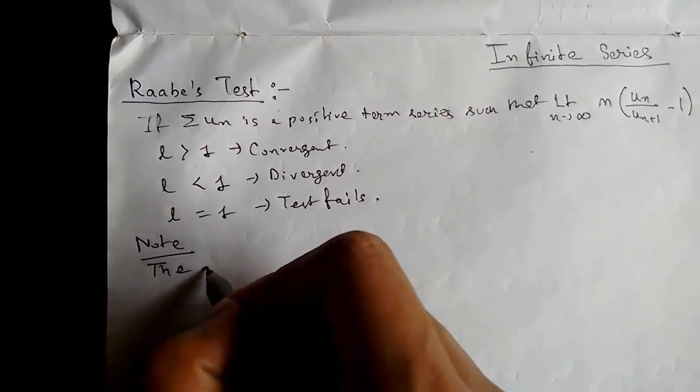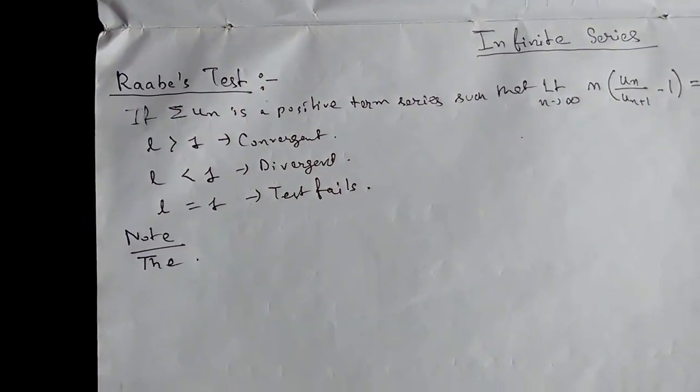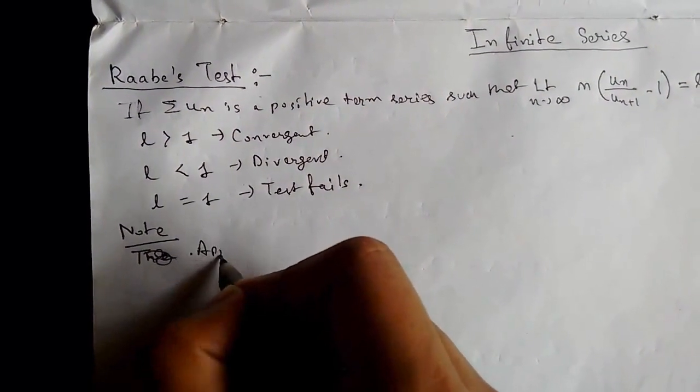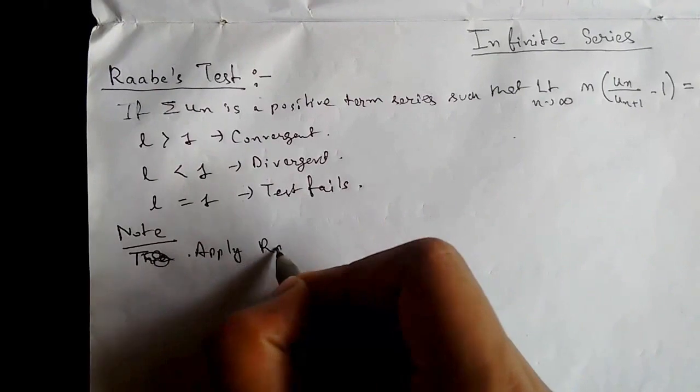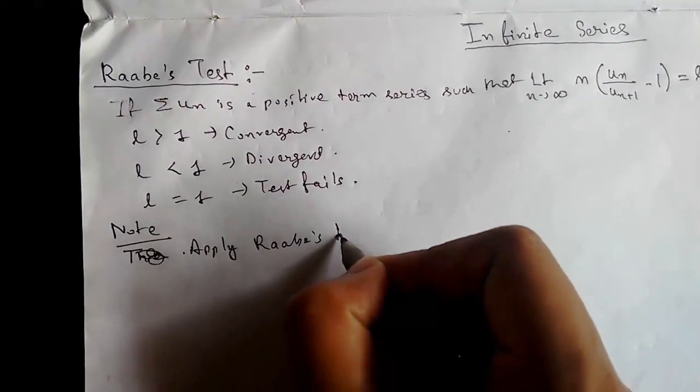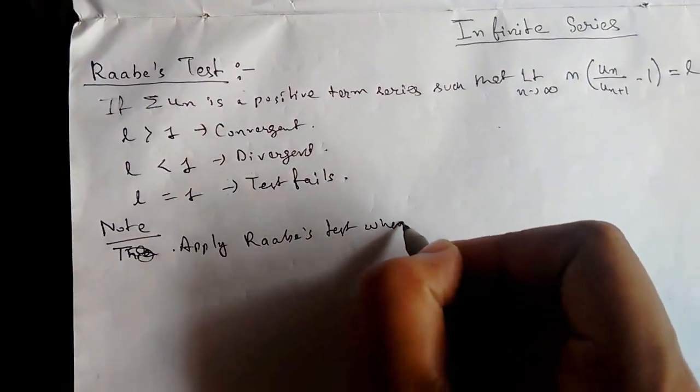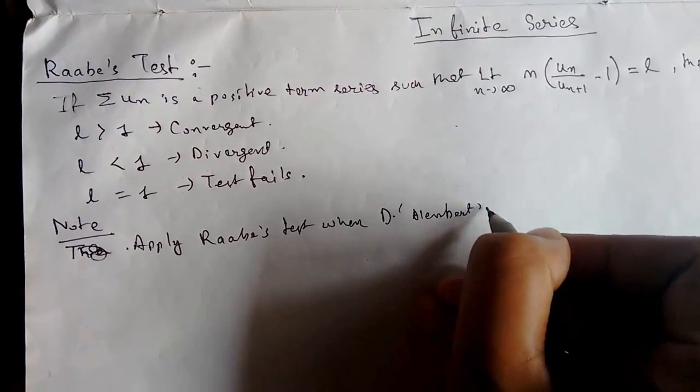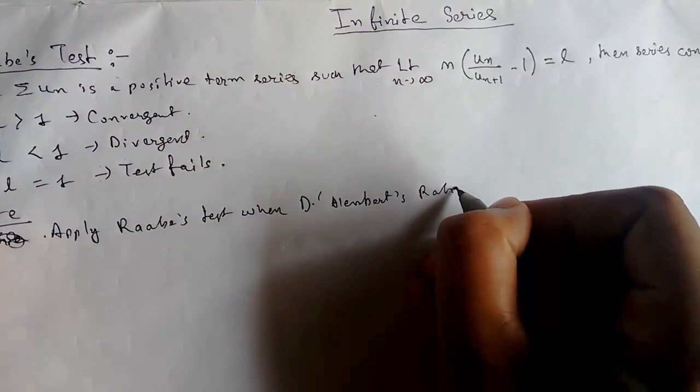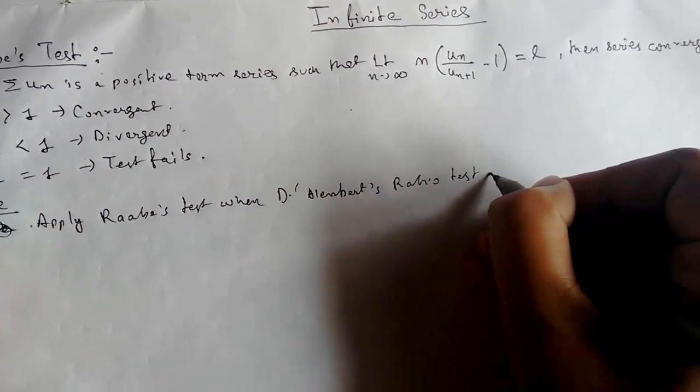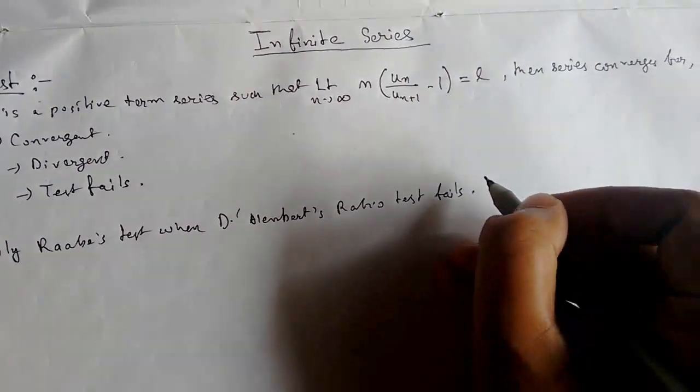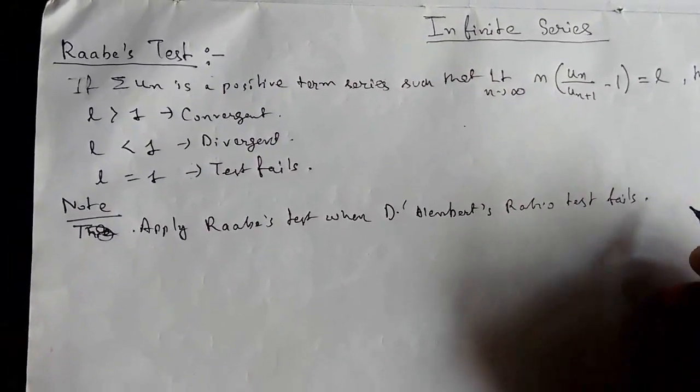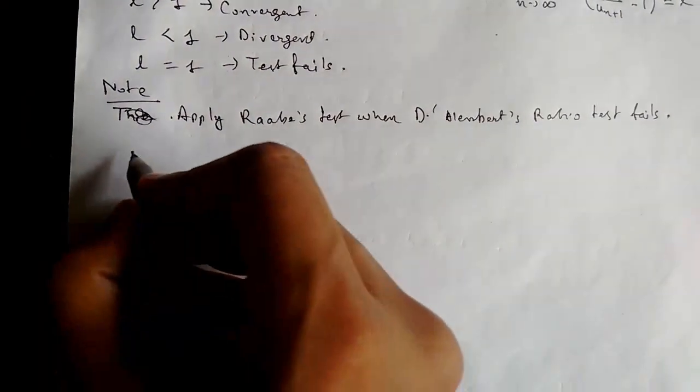Now let us take a note that the application of Raabe's theorem is only done when D'Alembert's ratio test fails. So apply Raabe's test when D'Alembert's ratio test fails. Do not apply it at the beginning - first apply D'Alembert's, then apply Raabe's test.